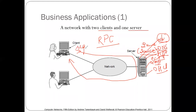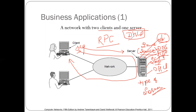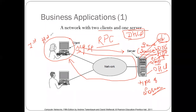In the client-server model, the service we get depends on the type of server we are using. For example, the DHCP server — Dynamic Host Configuration — its role is to provide an IP address. When a client boots up, it requests an address, because any device in a network needs an address to communicate. If the address is not set manually, a DHCP server provides it.